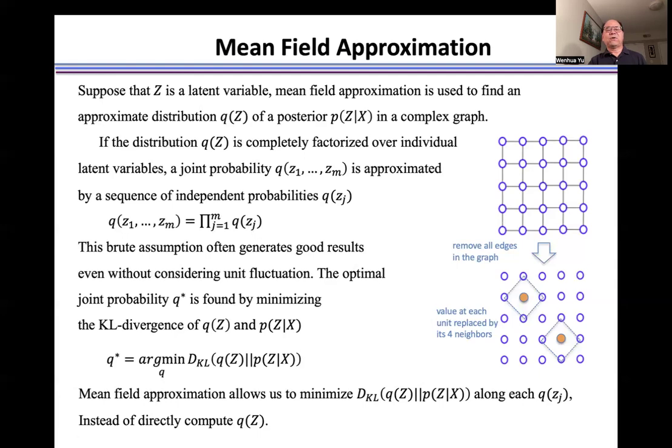This simple and straightforward assumption often generates very good results even without considering unit fluctuations. The optimal joint probability q* is found by minimizing KL-divergence of q(Z) and p(Z|X) here. Mean field approximation allows us to minimize this KL-divergence along each q(z_j) instead of directly computing the joint probability q(Z).